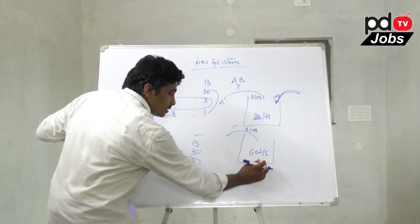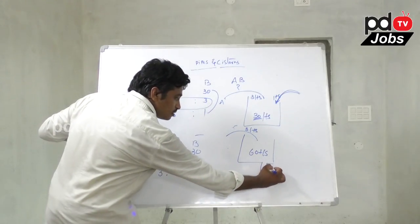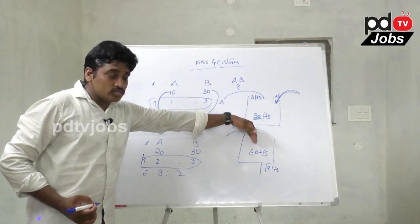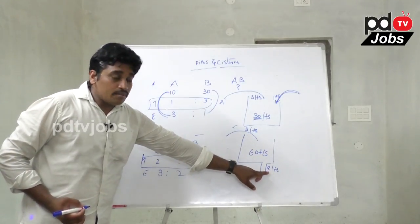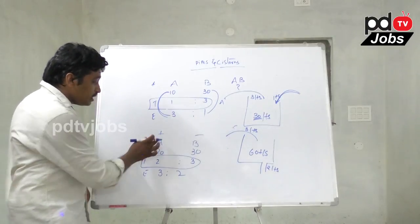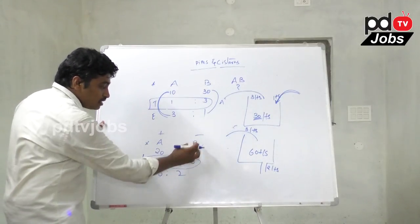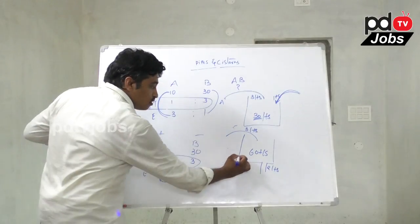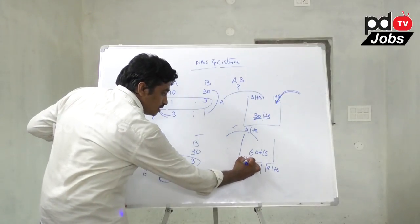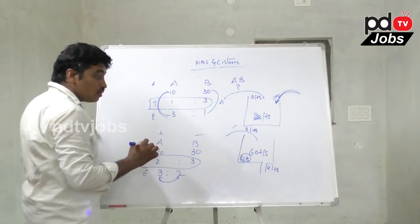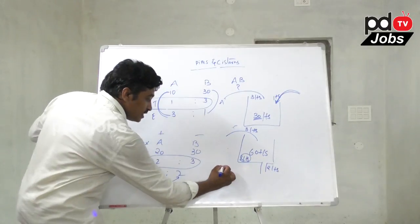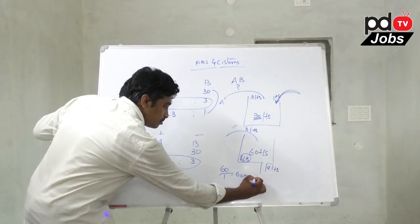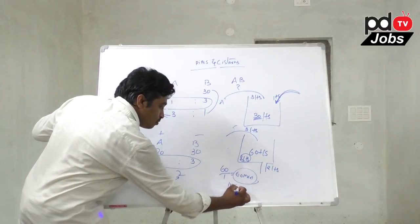Pipe B empties 2 liters and pipe A fills 3 liters, so the net fill rate is 1 liter per minute. With a tank capacity of 60 liters, it takes 60 minutes — that is 1 hour — to fill the tank.